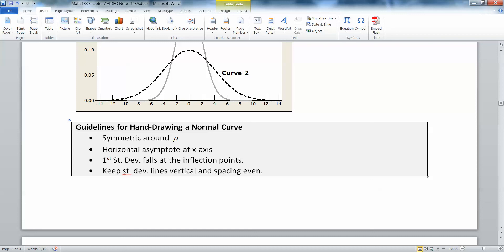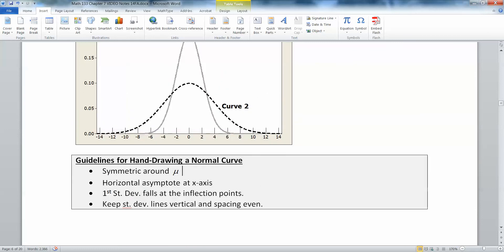Number two, you want to make sure you have a horizontal asymptote at your x-axis. Don't have the curve cross over the x-axis. It has to kind of surf along it and disappear. One, your first standard deviation falls at your inflection points. When you put down your standard deviation, make sure it happens just a little bit above halfway from the top of the curve to the bottom of the curve. That'll be your standard deviation.